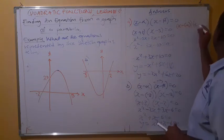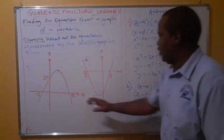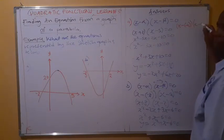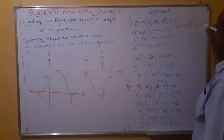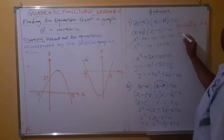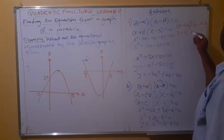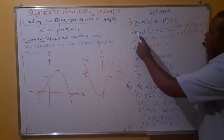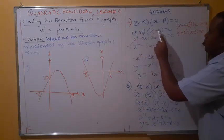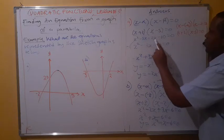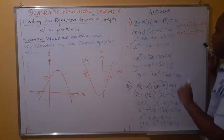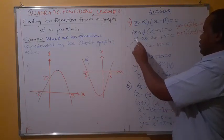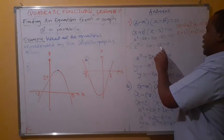Then again, x minus — what is beta? We have 5. So x minus 5 is equal to 0. This means x plus 2 equals 0, and x minus 5 equals 0. Then from here, you do the expansion: x times x is x squared; x by negative 5 is negative 5x; 2 by x is 2x; 2 by negative 5 is negative 10. Then you simplify, and you have x squared minus 3x minus 10 equals 0.